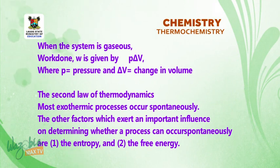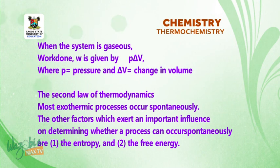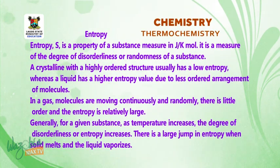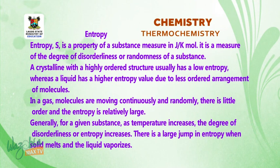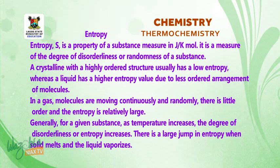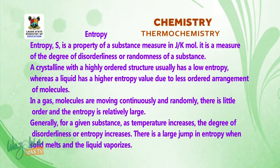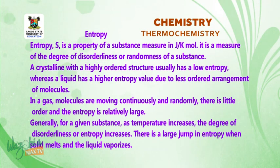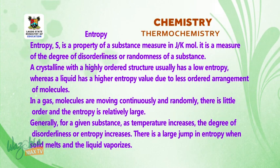Second law of thermodynamics: most exothermic processes occur spontaneously. Other factors which exert an important influence on determining whether a process can occur spontaneously are entropy and free energy. Entropy S is a property of substance measured in joules per Kelvin per mole. It is a measure of the degree of disorderliness or randomness of a substance. A crystalline solid with a highly ordered structure usually has a low entropy, whereas a liquid has a higher entropy value due to a less ordered arrangement of molecules. In a gas, molecules are moving continuously and randomly, so there is little order and the entropy is relatively large. Generally, for a given substance, as temperature increases, the degree of disorderliness or entropy increases.